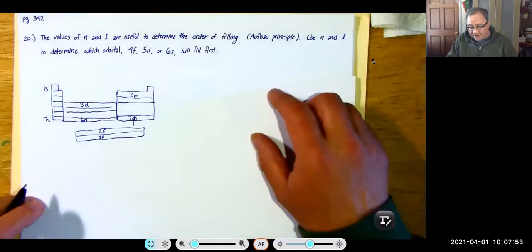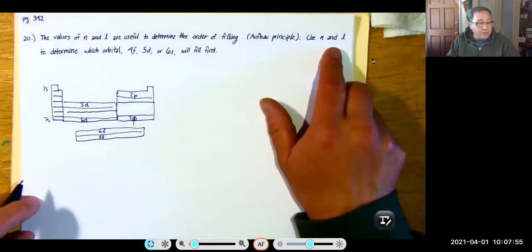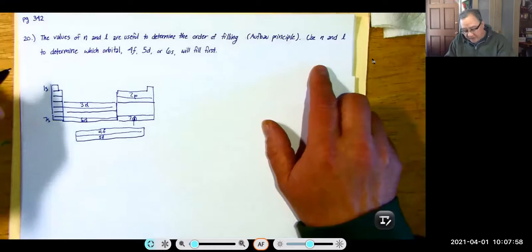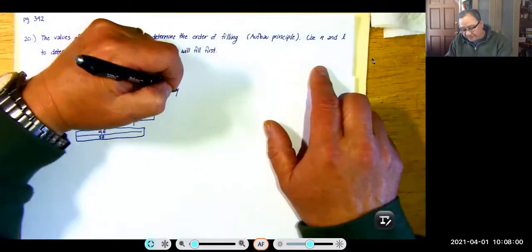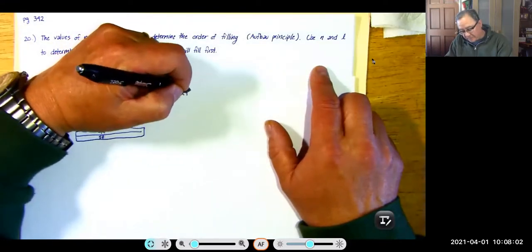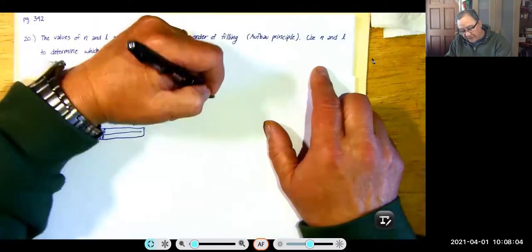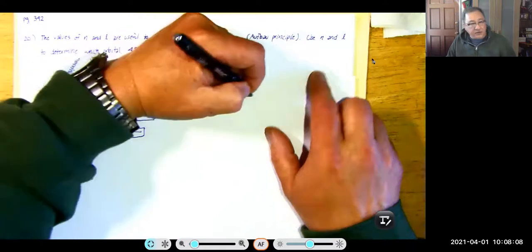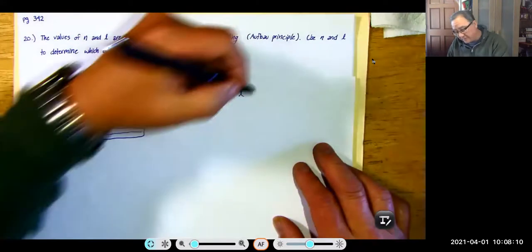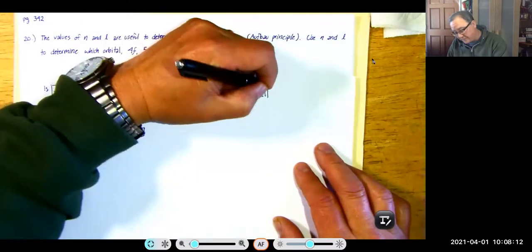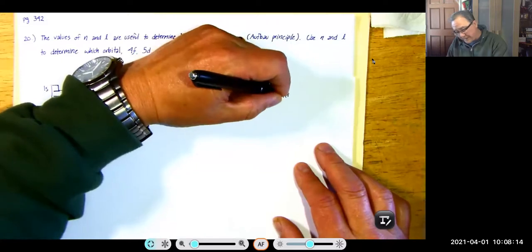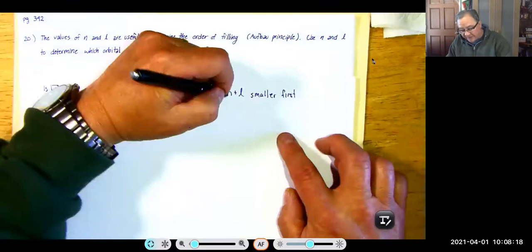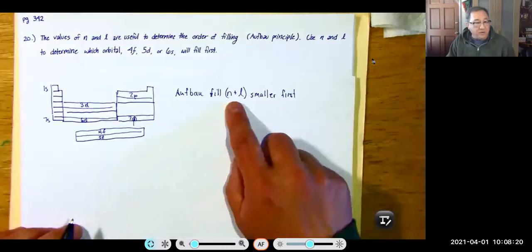The Aufbau principle simply says you can use N+L to determine which orbital fills first. You fill N+L small first. And then if the sum of N+L is the same, you fill the lower N first.